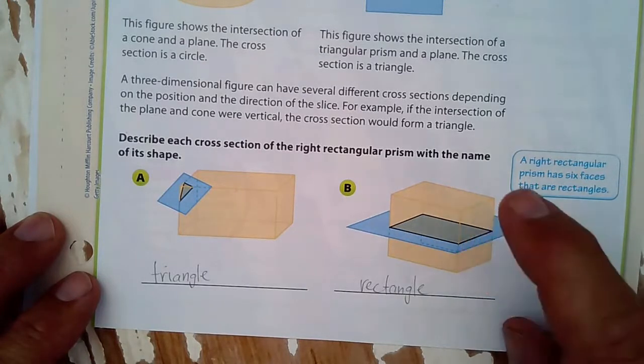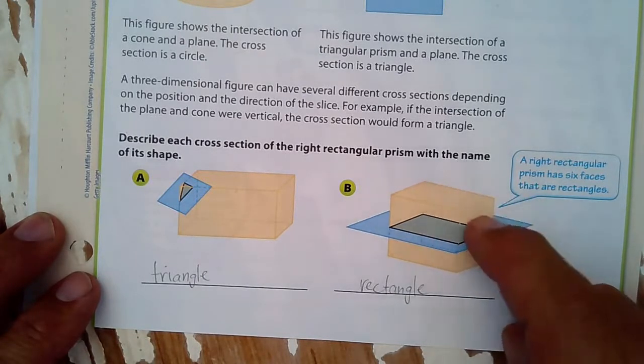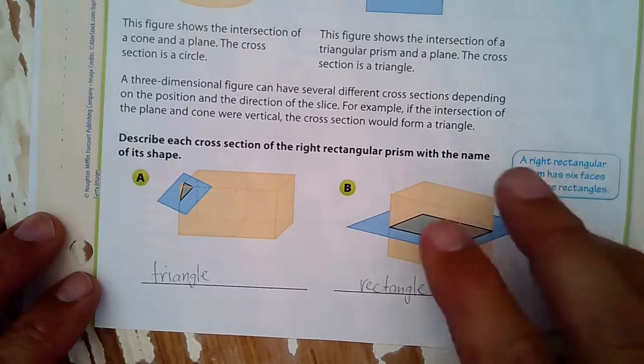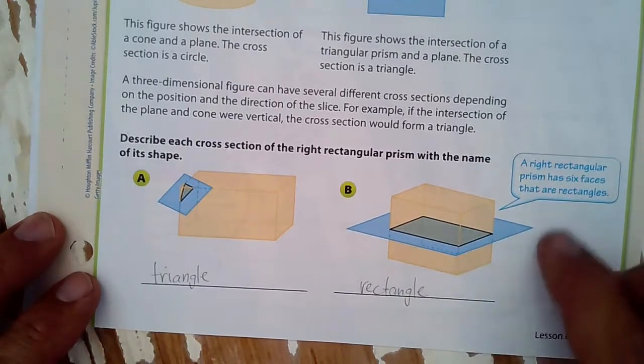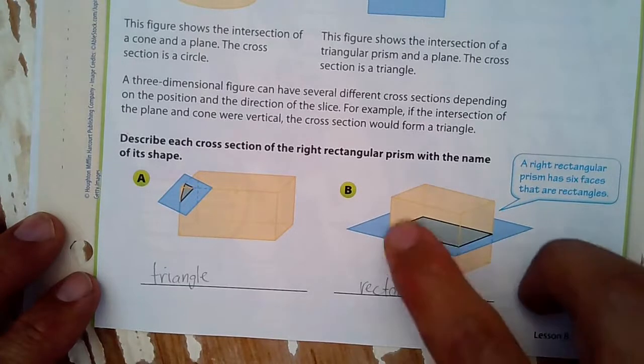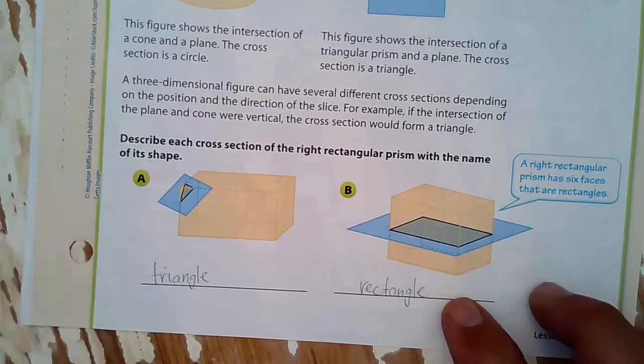Take a look at one, two, three, four, five, six. You can notice the six faces that are rectangle, all through this rectangular prism.